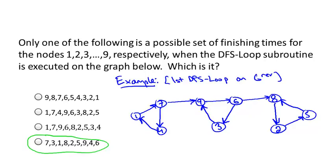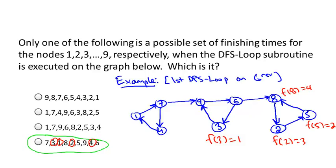We backtrack to six. Now we explore the other outgoing arc to eight. From eight we go to two, from two to five, from five to eight — but eight is already seen, so we're done with five: finishing time of five is two. Backtracking to two: no more outgoing arcs, so two's finishing time is three. Then eight finishes with finishing time four. We backtrack to six, which finishes with finishing time five. Finally we get back to nine, which finishes with finishing time six — all as promised.